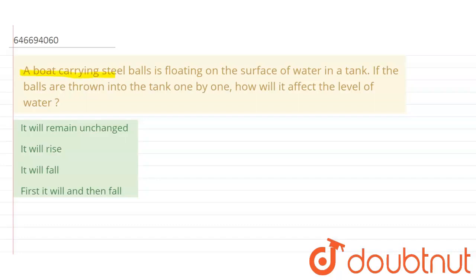A boat carrying steel balls is floating on the surface of water in a tank. If the balls are thrown into the tank one by one, how will it affect the level of water?